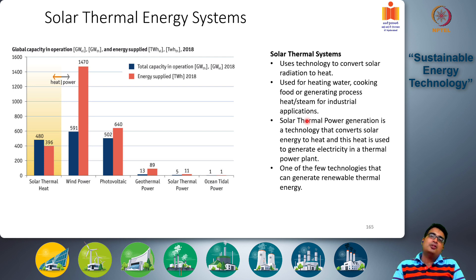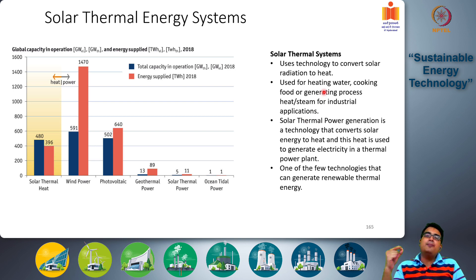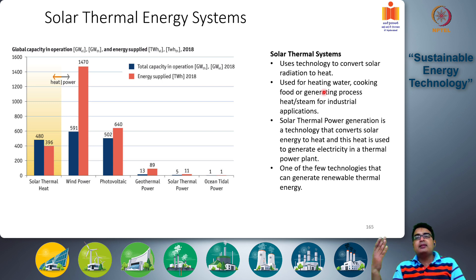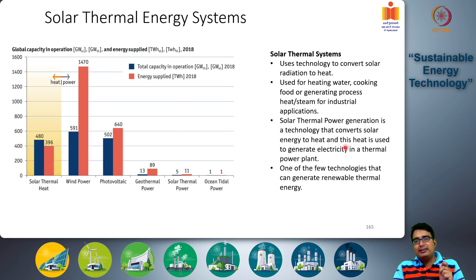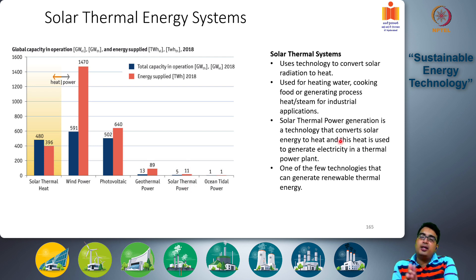The basic features of solar thermal systems: the technology converts solar radiation to heat, used for heating water, cooking food, or generating process heat or steam for industrial applications. Solar thermal power generation converts solar energy to heat, and that heat is used to generate electricity in a thermal power plant.